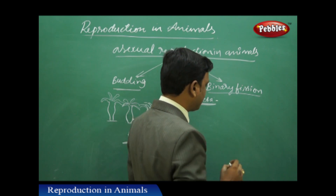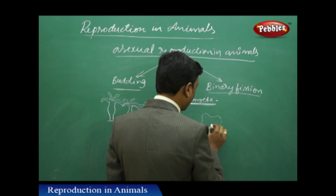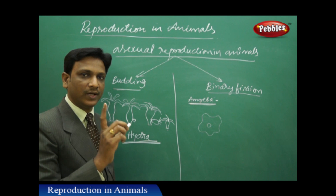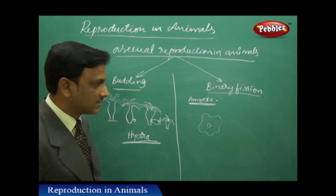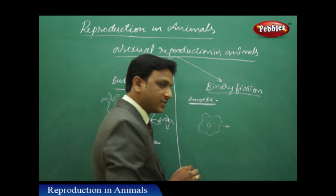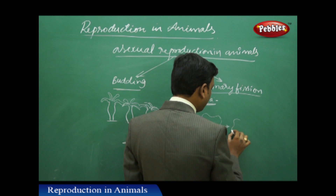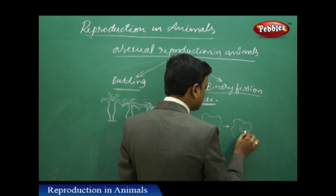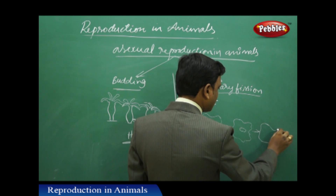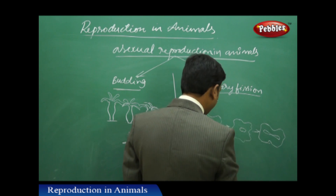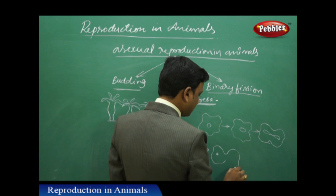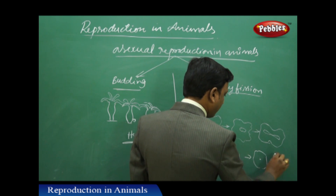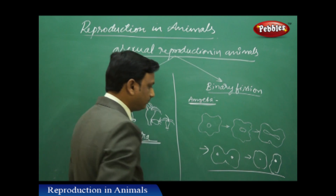If we take amoeba as an example — amoeba is a unicellular organism, a protozoan, and it has a cytoplasm and a nucleus. Its body is comprised of only a single cell. If we observe the binary fission slides of amoeba, we can clearly see that when the amoeba splits into two by binary fission, its nucleus starts dividing and its cytoplasm also starts dividing. The nucleus divides into two and the cytoplasm also divides into two, and finally the amoeba divides into two.